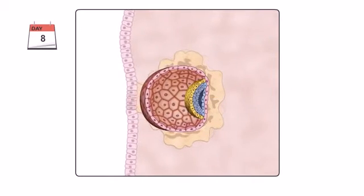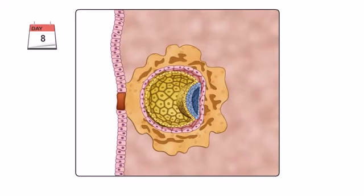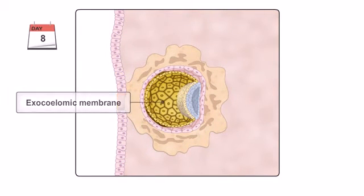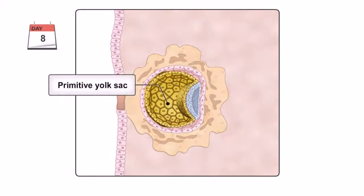Cells originating from the hypoblast begin to migrate, forming a thin membrane which covers the inner surface of the cytotrophoblast. This is called the exocylomic membrane. The exocylomic membrane and cells of the hypoblast together form the walls of the primitive yolk sac.